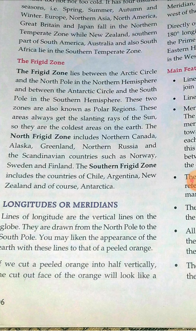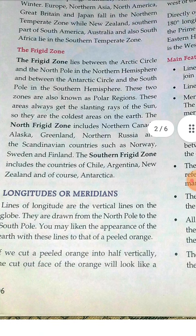The northern frigid zone includes Northern Canada, Alaska, Greenland, Northern Asia, Russia, and Scandinavian countries such as Norway, Sweden, and Finland. The southern frigid zone includes Chile, Argentina, New Zealand, and Antarctica.